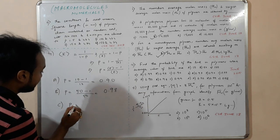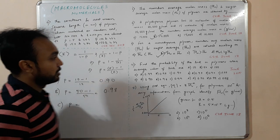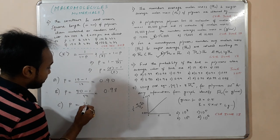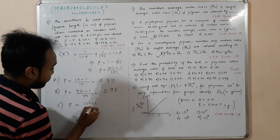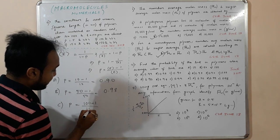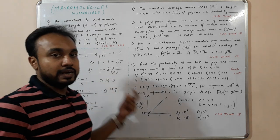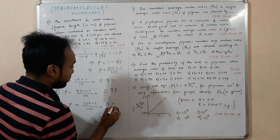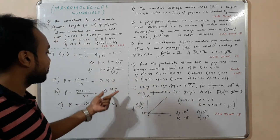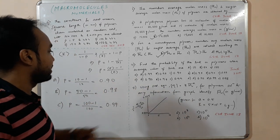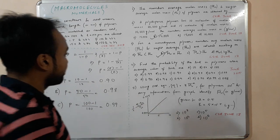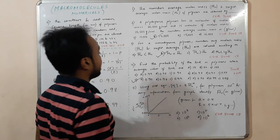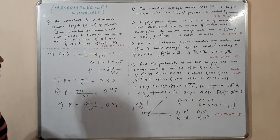For K̄ = 100: P = 99/100 = 0.99. So the three probability values are 0.90, 0.98, and 0.99. This matches option C, so C is the correct answer.